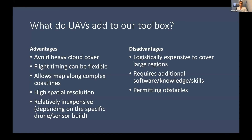So what do UAVs add to our toolbox? They have lots of advantages. One is that you can avoid heavy cloud cover that you can't with satellite imagery. Flight timing can be flexible and allows mapping along complex coastlines, which present a much more difficult task with higher-resolution satellite imagery. UAVs get around that with very high spatial resolution. They're also relatively inexpensive — you can buy a Phantom 4 drone and go out and map kelp forests, which gives an avenue for people with no prior remote sensing expertise to study these systems.